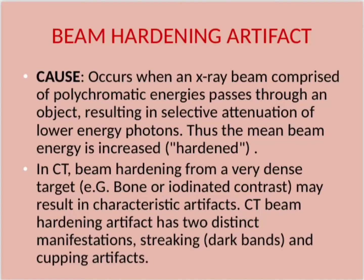Beam hardening artifact occurs when an x-ray beam comprised of polychromatic energies passes through an object, resulting in selective attenuation of lower energy photons, thus the mean beam energy is increased — hardened. In CT, beam hardening from a very dense target, for example bone or iodinated contrast, may result in characteristic artifacts.